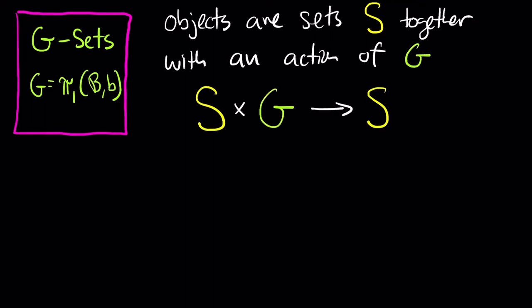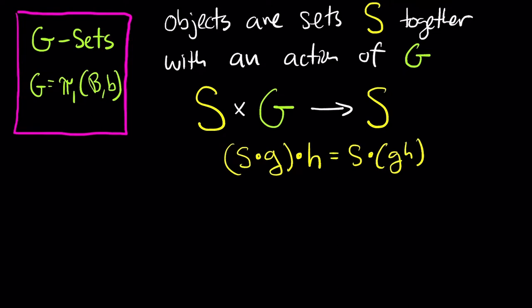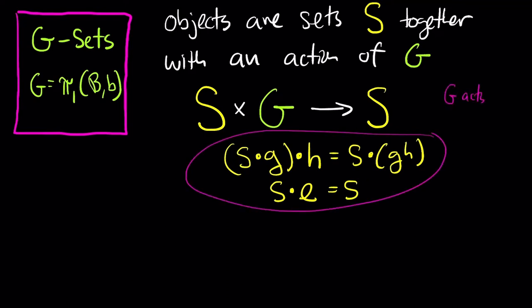What is this category? The objects are sets together with a function from S cross G into S that's compatible with the group operations. It means that if I act on an element s in my set by a group element g and then by h, it's the same as first multiplying the group elements gh and then acting on the set. The second condition is that the identity element of the group acts as the identity on the set. It's worth pointing out that here I'm considering right group actions — those are the ones relevant for the theory of covering spaces. You could also consider the parallel discussion for left group actions.